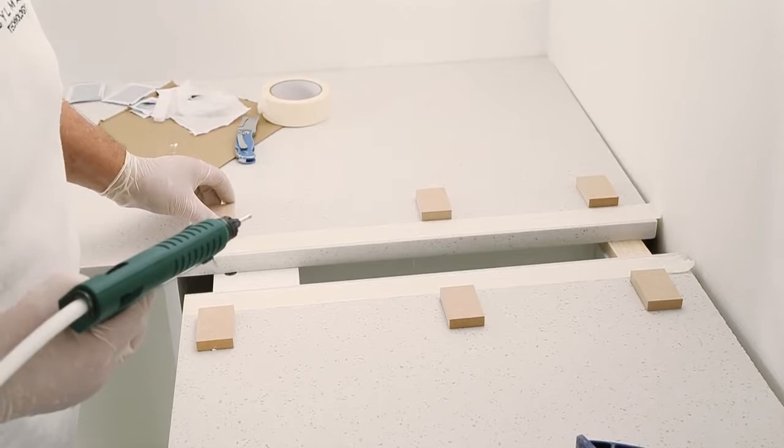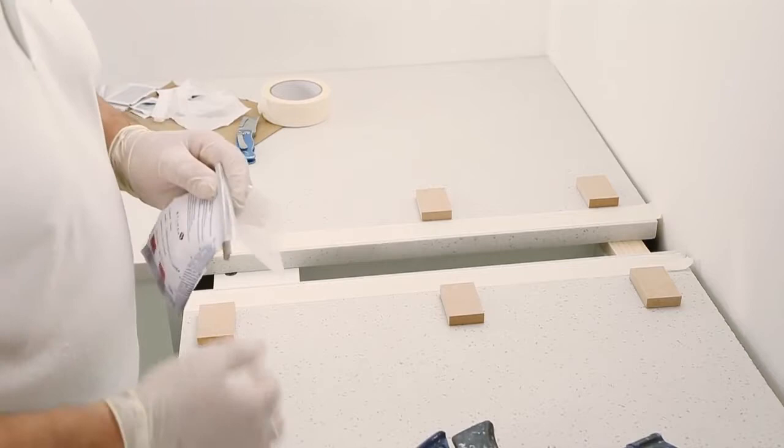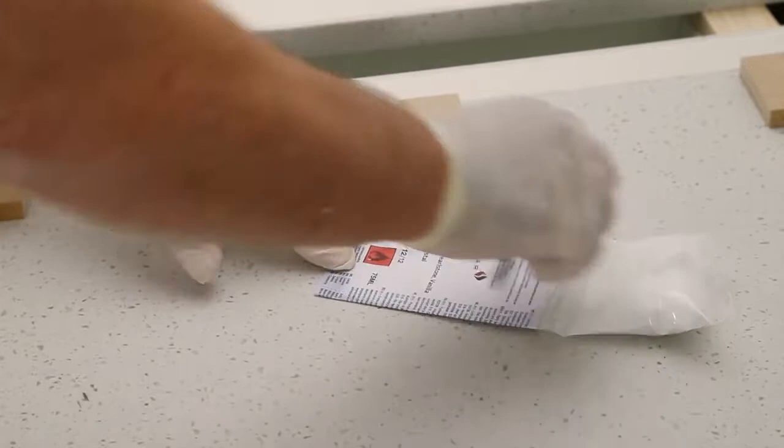With the joint prepared and three clamps ready to use, the adhesive can now be mixed. The grey divider is carefully removed and the adhesive mixed in the sachet, ensuring that the two parts are thoroughly mixed.